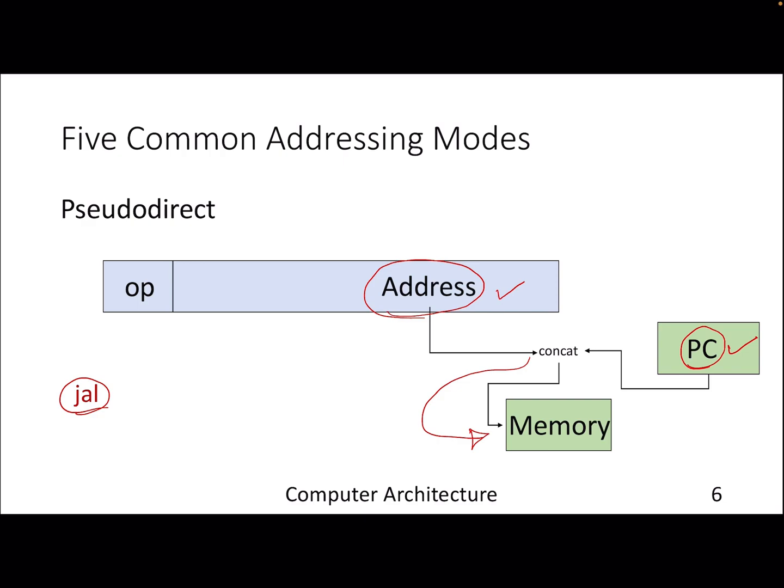Overall, these are the five different addressing modes. You can actually play with these addressing modes to come up with your own variants, but these are the addressing modes in MIPS. With that, thank you.